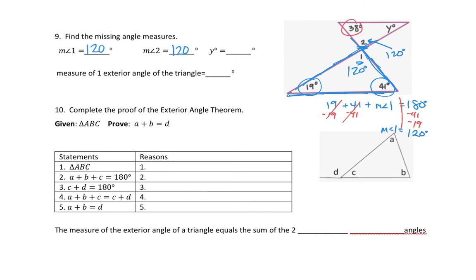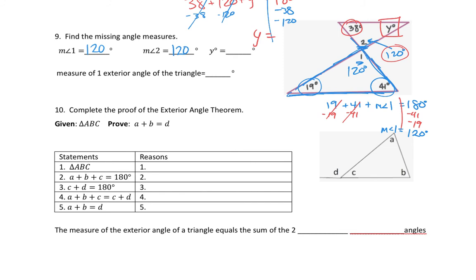Now I know angle 2 is 120 and the other angle is 38, so I can figure out angle Y because that triangle has to add up to 180 degrees. Using the calculator: 180 minus 38 minus 120 equals 22. So Y equals 22 degrees.